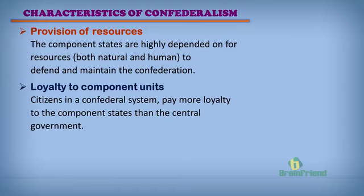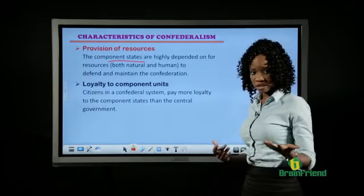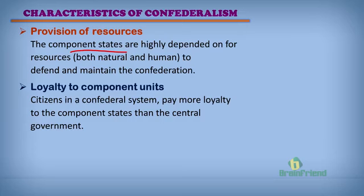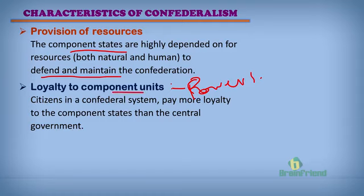Also, in a confederal system of government, the provision of resources is different from the federal system. The component states are depended on for resources — be it natural or human — to provide these resources for the central government to maintain and defend the confederation. We also have the matter of loyalty to the component units: because of the powers given to them, citizens in the confederacy pay more loyalty to the component states rather than to the central government, knowing the states have more powers.